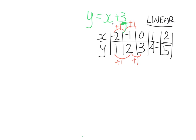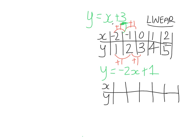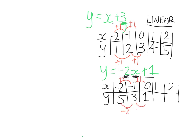Let's also look at y equals minus 2x plus 1. Draw up a table of values with x from minus 2 to 2. If x is minus 2, y is minus 2 times minus 2 plus 1, which is 4 plus 1 equals 5. If x is minus 1, y is minus 2 times minus 1 plus 1 equals 3. If x is 0, y is minus 2 times 0 plus 1 equals 1. Each time x is going up by 1, y is going down by 2 each time — so this is also linear.